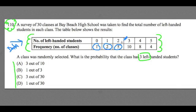Five classes had two left-handed students. And we could continue. There's ten classes that had three left-handed students. And we could continue on this chart.